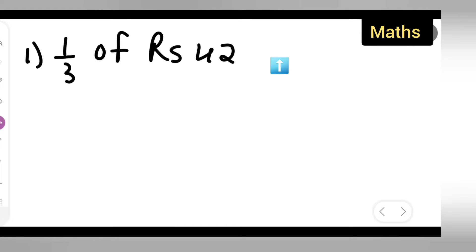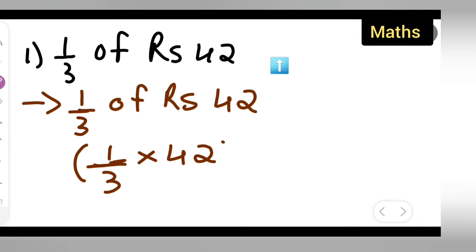So first write down 1 upon 3. Let us do it in stepwise order. 1 upon 3 of rupees 42. The next step is going to be: write down in the bracket 1 upon 3 multiplied by 42.